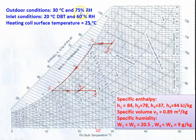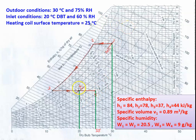For outdoor condition, 30 degree Celsius, 70 percent relative humidity, draw the vertical line. For the inlet conditions, 20 degree dry bulb temperature and 60 percent relative humidity, draw the vertical line and locate the point. The heating coil surface temperature is 25 degree Celsius, so locate this point as well.